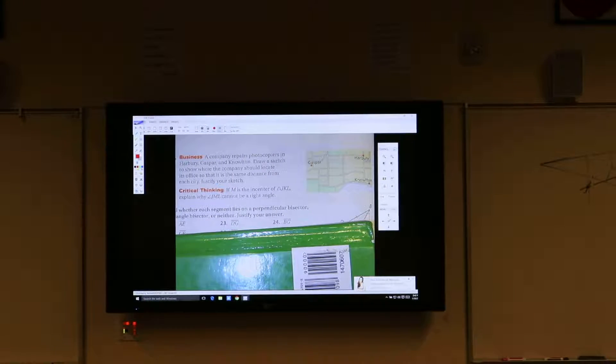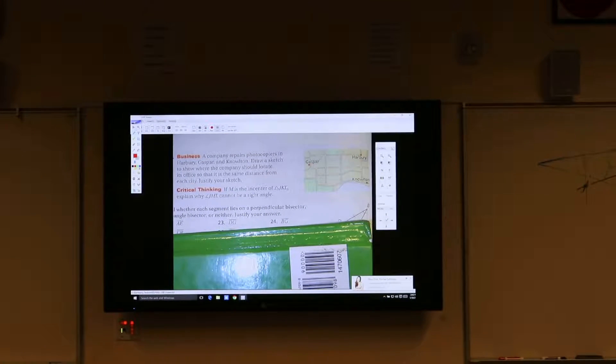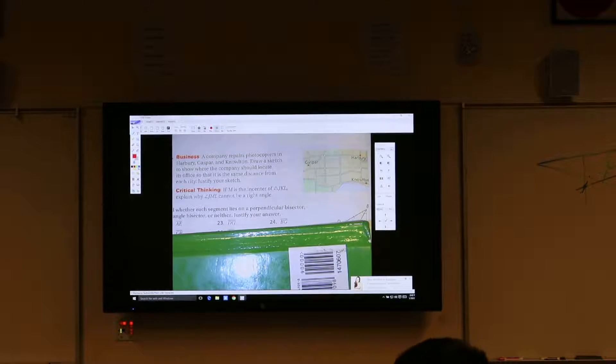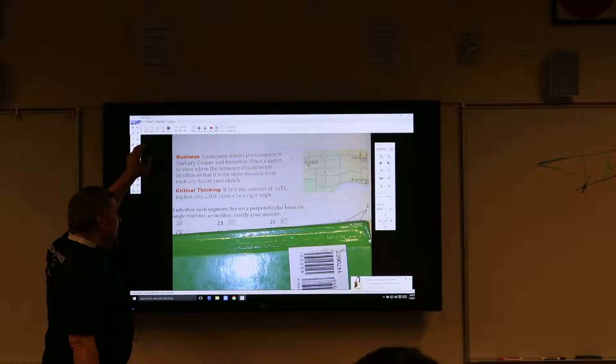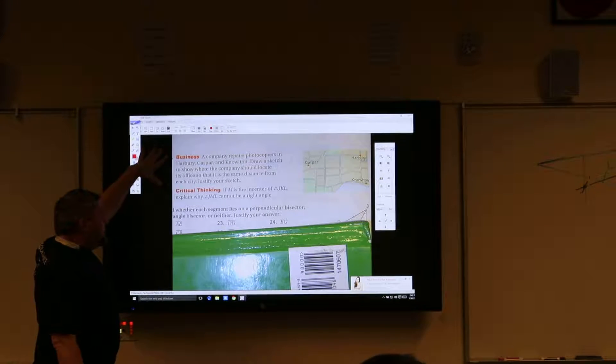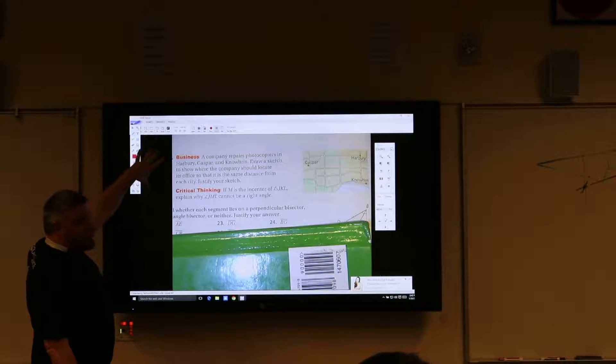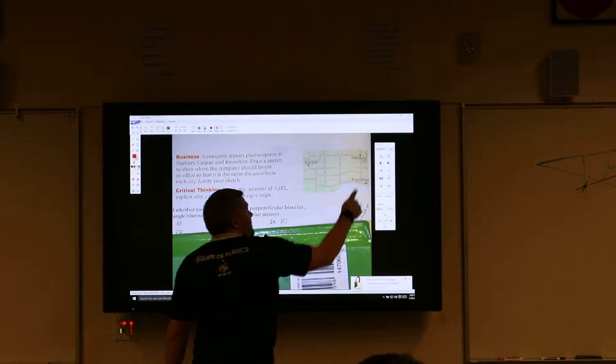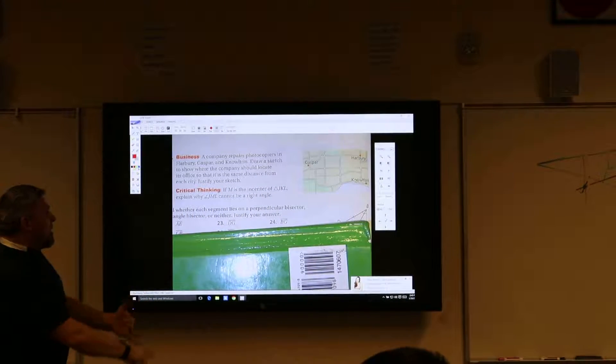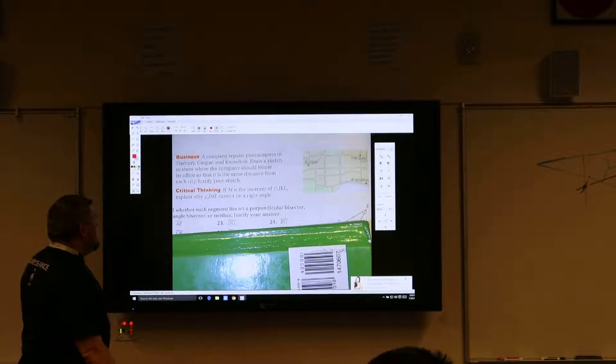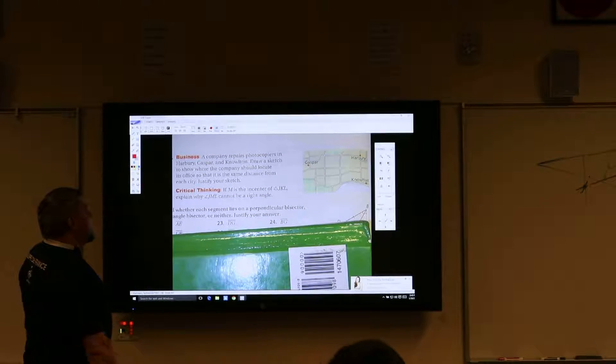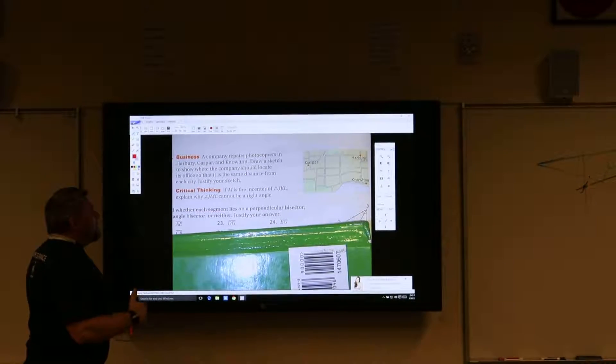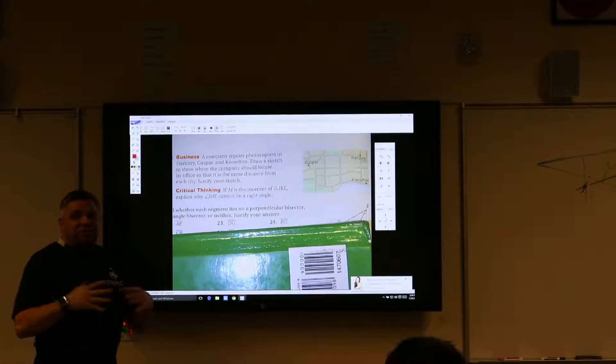Here we go. I don't know how well this is going to come up. It doesn't have a lot of zoom on that one. Alright, so here we go. So here's a company that repairs photocopiers for these three cities: Gaspar, Harberry, and Nalton. And they want you to draw a sketch to show where a company should locate its office so that it is the same distance from each city.